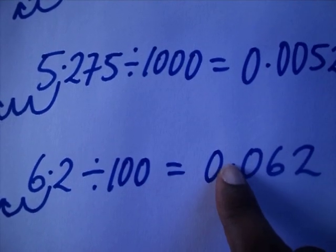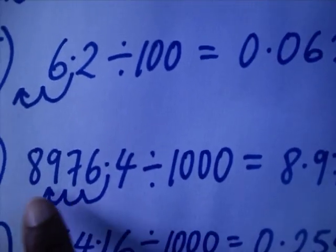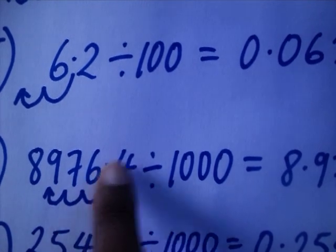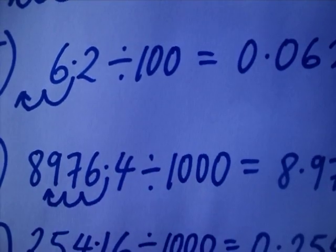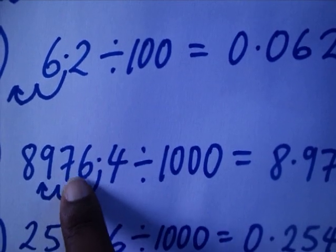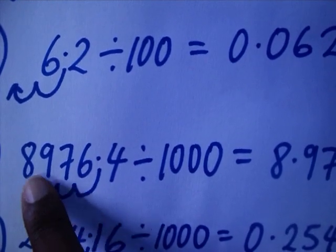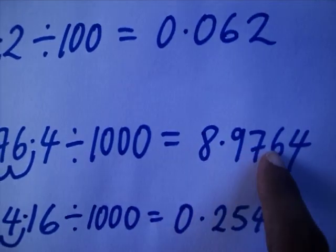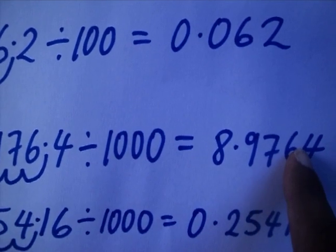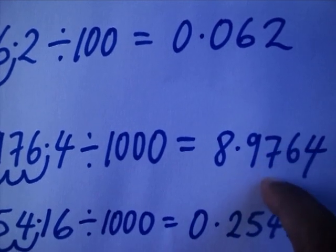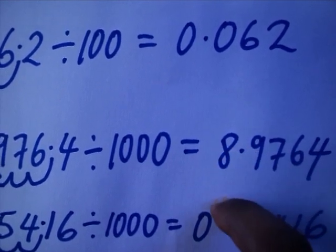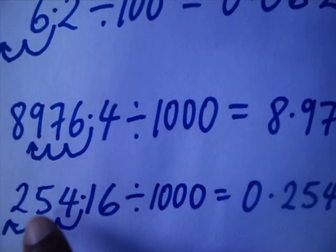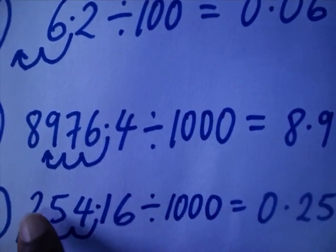Again, 8907.564 divided by 1000. I'm going to shift the point once, twice, three times. So it will be 8.9764. It was there — divide by a thousand — you shift the point once, twice, three times. So it is 8.9764.